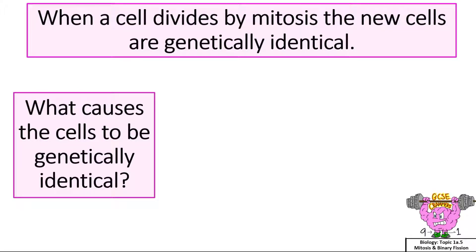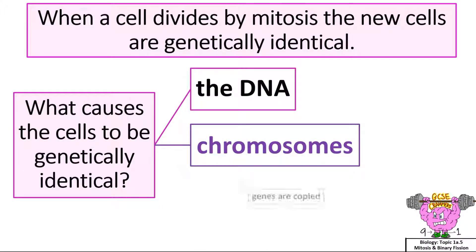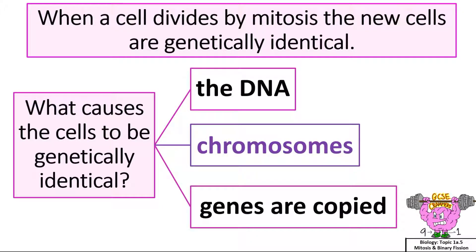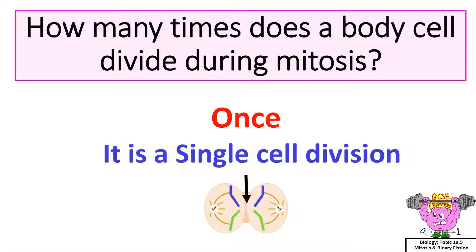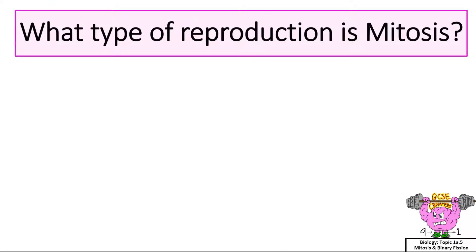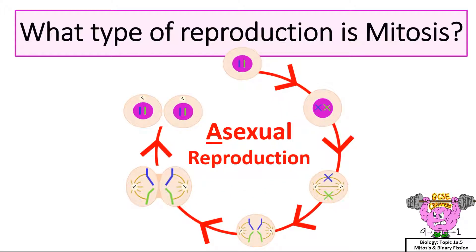Any of these answers would be correct: DNA, or the chromosomes, or the genes are copied. How many times does a body cell divide during mitosis? Once. It is a single cell division. What type of reproduction is mitosis? Asexual reproduction.